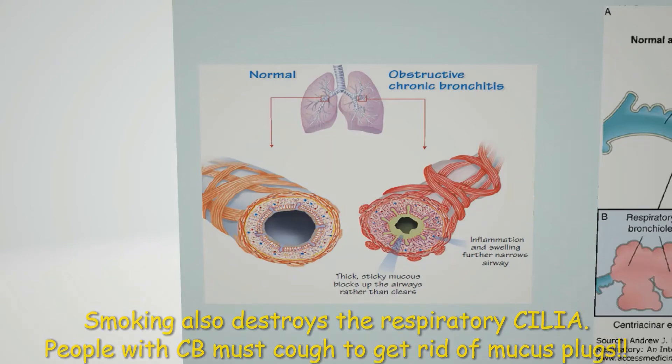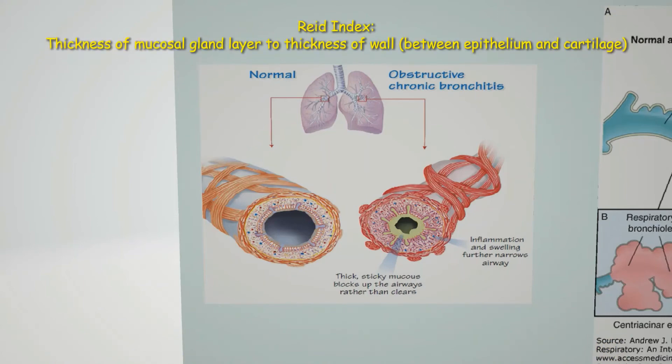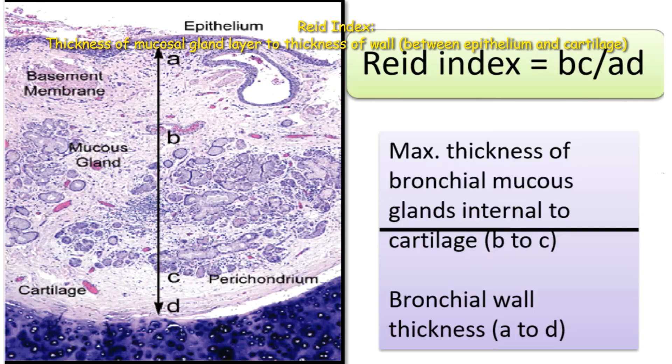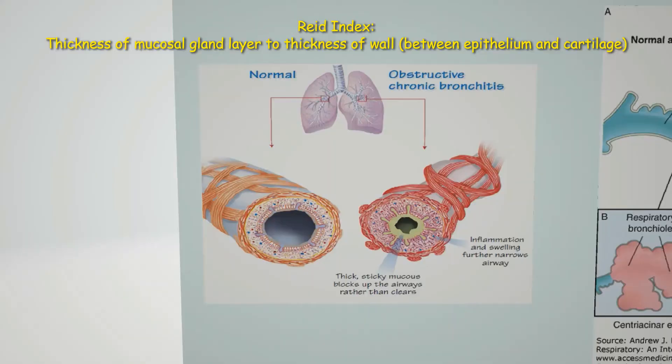The Reid Index is a ratio of the thickness of the bronchial mucinous glands relative to the total thickness of the airway from the epithelium to the cartilage. Normally this ratio should be less than 40%, but it can be over 40% in people with chronic bronchitis because of the hyperplasia and hypertrophy of the glands.